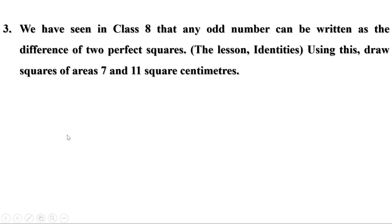Next problem. We have seen in class 8 that any odd number can be written as the difference of two perfect squares. Using this, draw squares of area 7 and 11 square centimeters. To draw a square, we need the length of one side. To draw the square of area 7 square centimeters, the side should be root 7 centimeters.